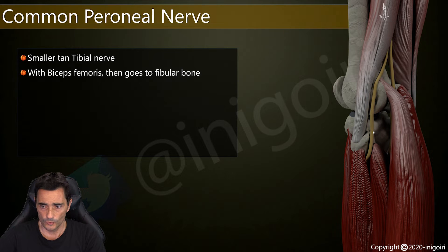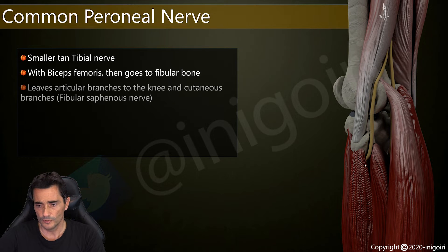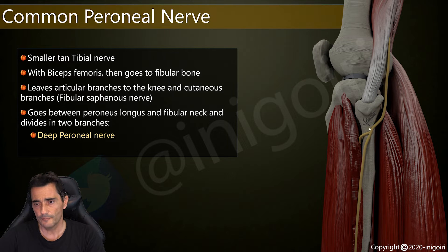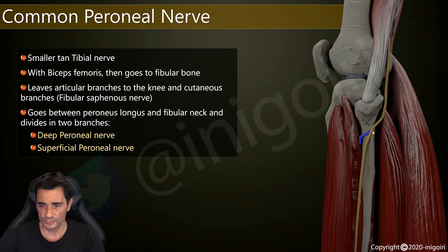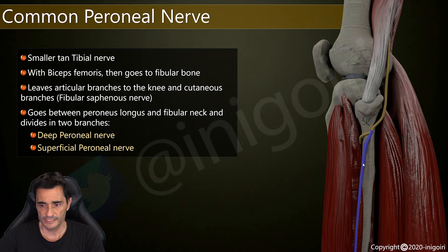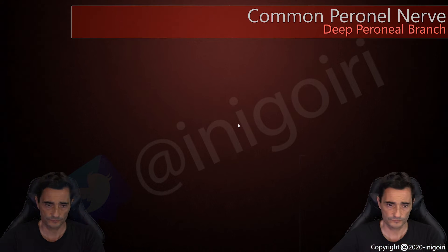Once the nerve reaches this area, it continues below, underneath the peroneus longus muscle, into the peroneal tunnel — which is below the peroneus longus muscle and above the neck of the fibula. At this level it divides into its branches: the deep peroneal nerve, also called the deep fibular nerve, which goes deep toward the interosseous membrane, and the superficial peroneal nerve, which continues underneath the peroneus longus and becomes superficial. We will first follow the deep peroneal branch.